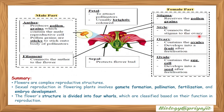The ovary contains the ovules, which develop into seeds after fertilization, and the ovary itself develops into the fruit after fertilization. The ovule contains the egg cell. In summary, flowers are complex reproductive structures. Sexual reproduction in flowering plants involves gamete formation, pollination, fertilization, and embryo development. The flower structure is divided into four whorls classified based on their function in reproduction.